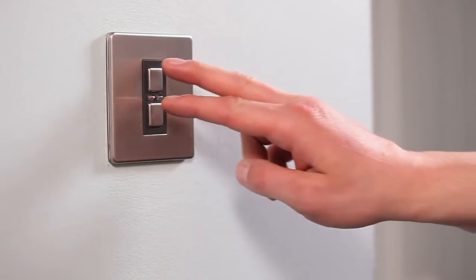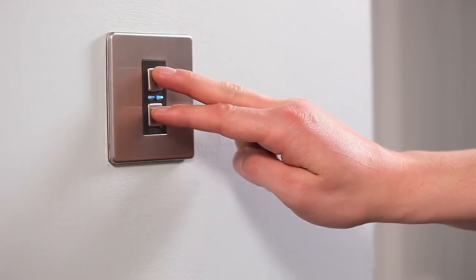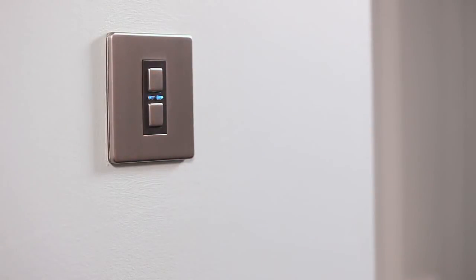To unlink a control device, first on the dimmer switch, press and hold down both the off and on buttons until the blue and amber LED indicators flash alternately. The dimmer switch is now in linking mode.